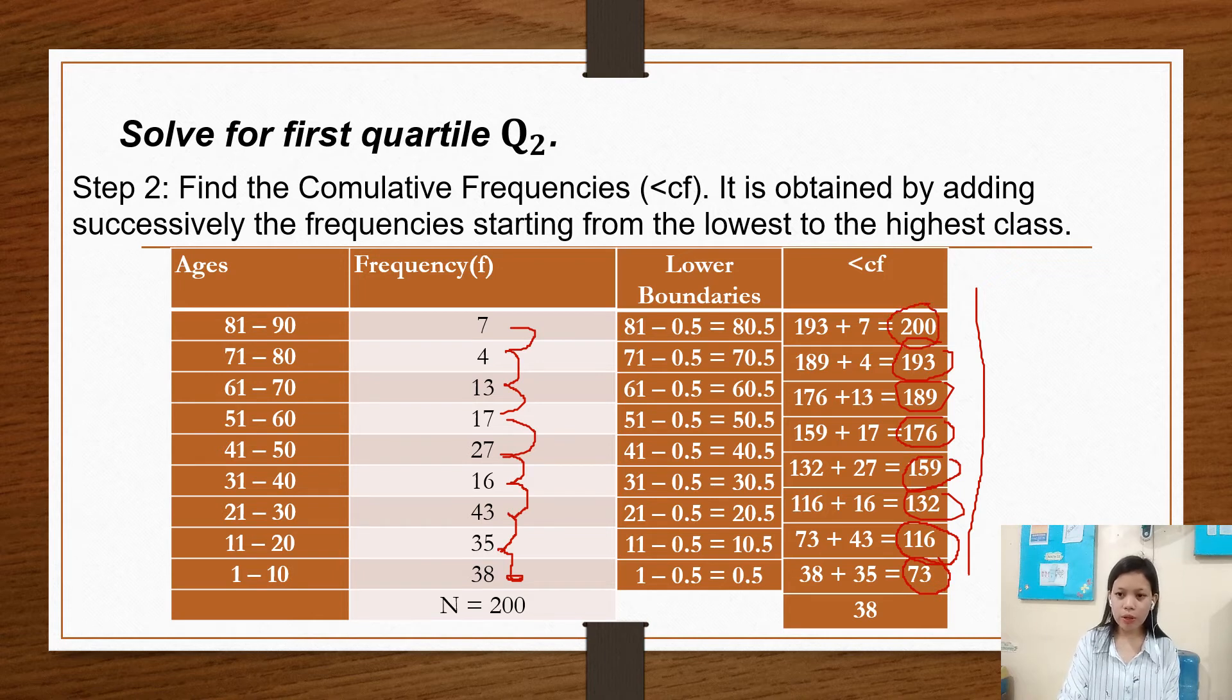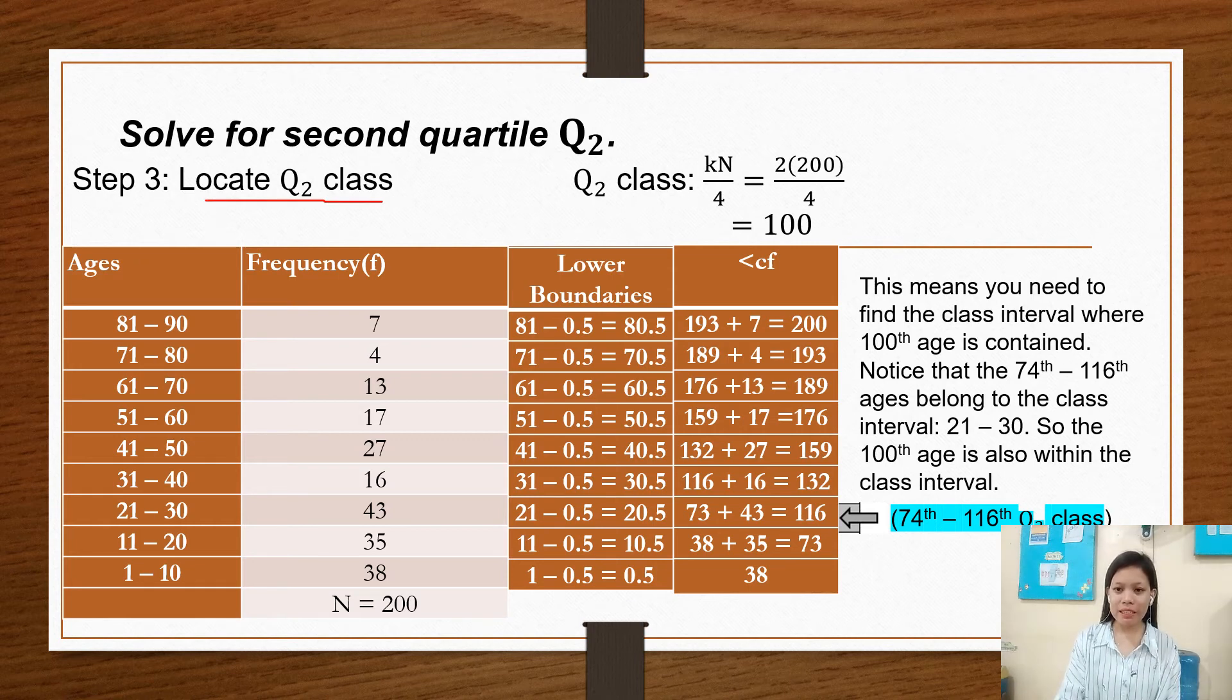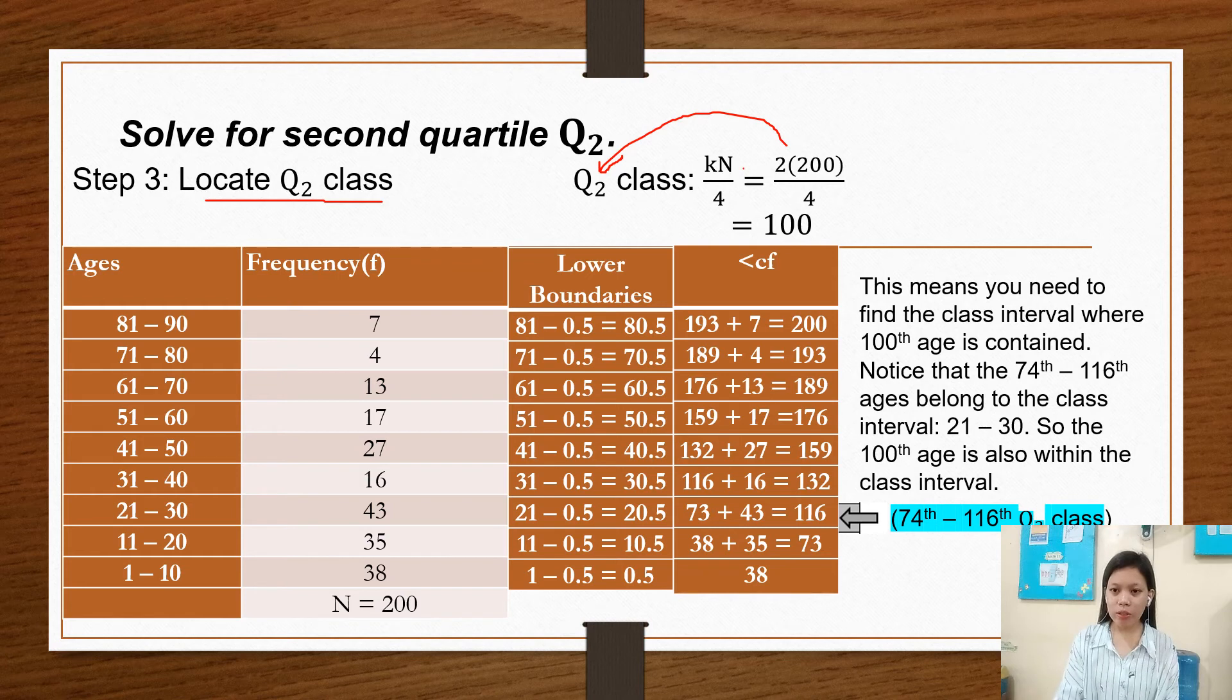So our cumulative frequency is by adding successively from lowest to the highest class. So the third step is we have to locate the Q sub 2 class. The formula for Q sub 2 class is Kn over 4. So this is Kn over 4 equals 2, which represents the K, times 200, which is the total number of data, over 4 equals 100.